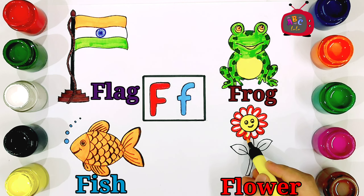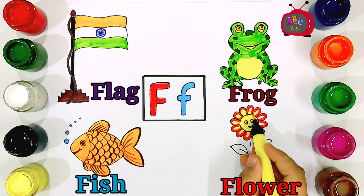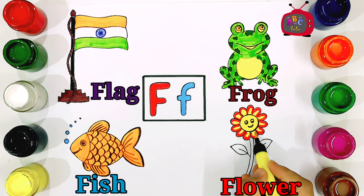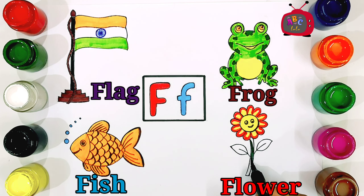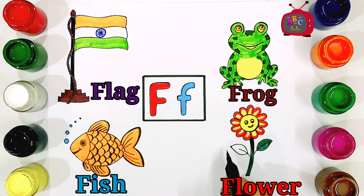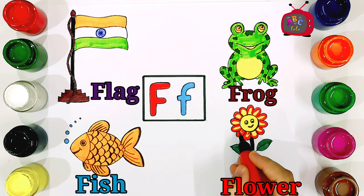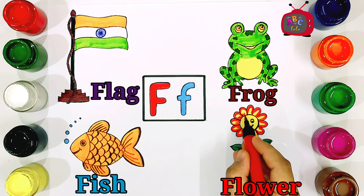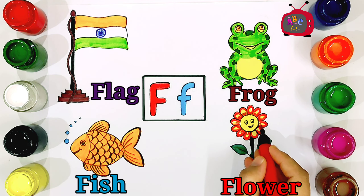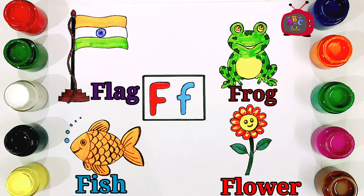A B C D E F G H I J K L N O P. A B C D E F G H I J K L N O P. F for Flags. Next time won't you sing with me. Now you know your ABC.